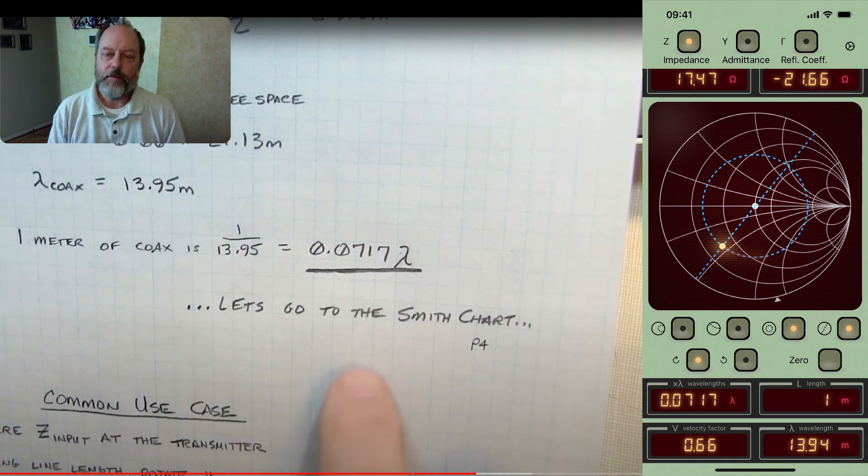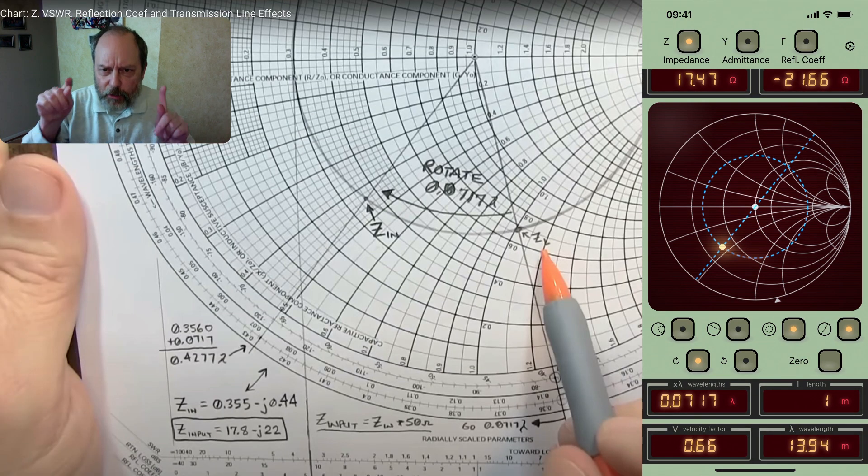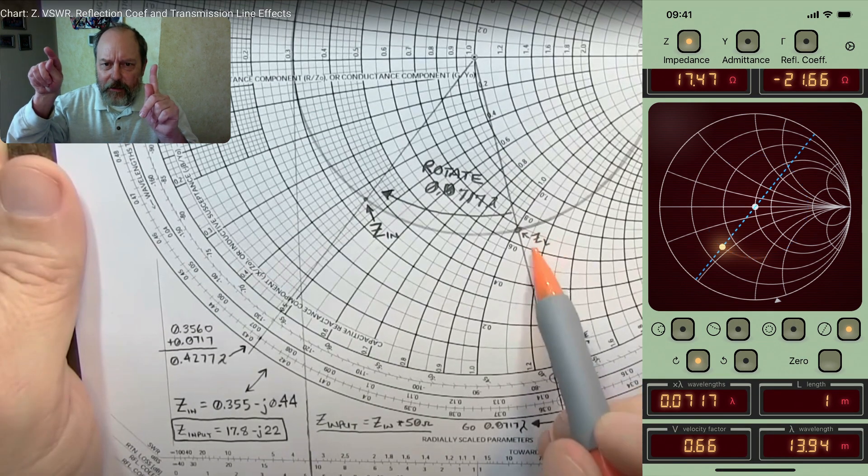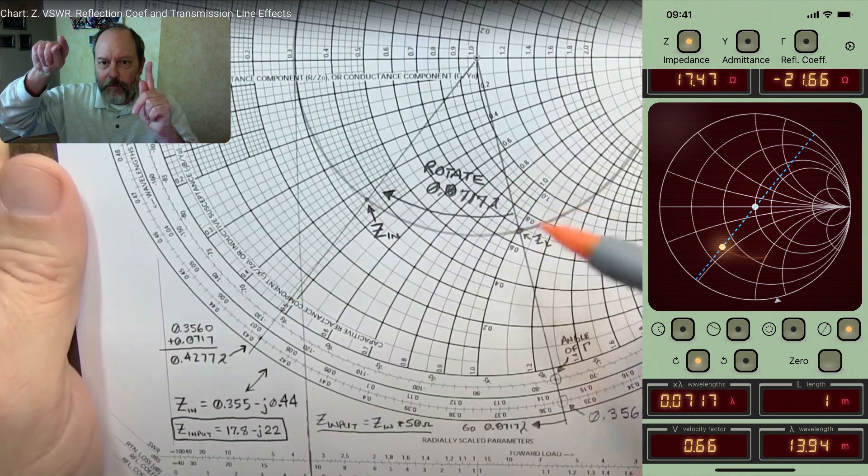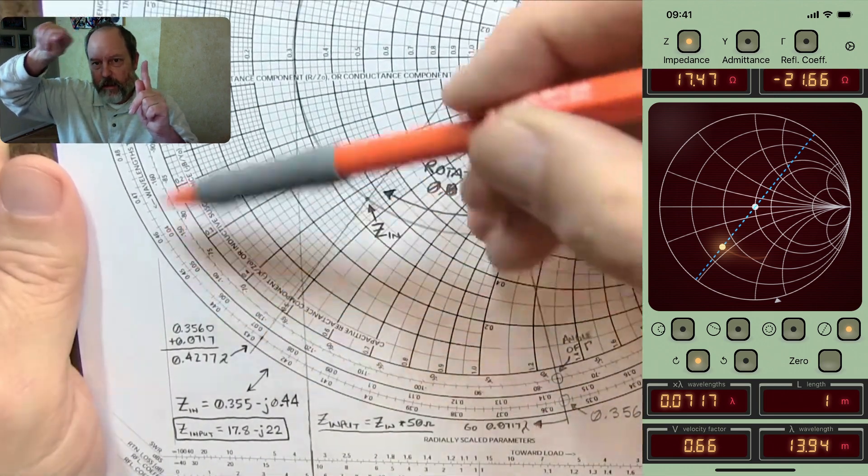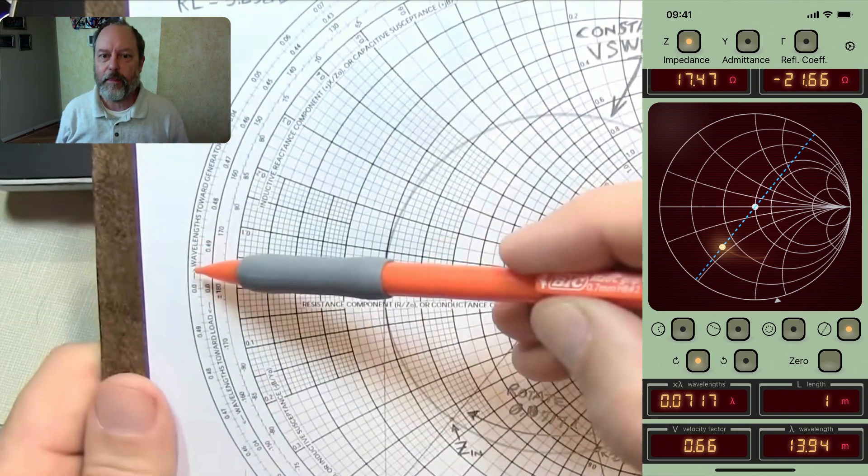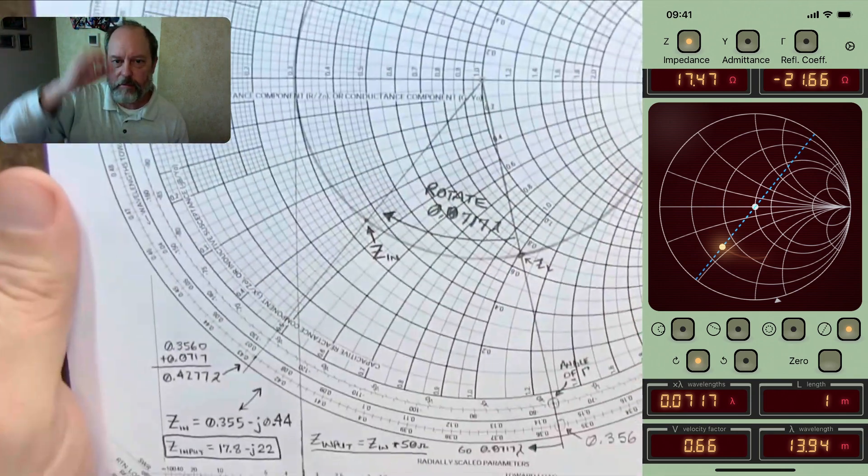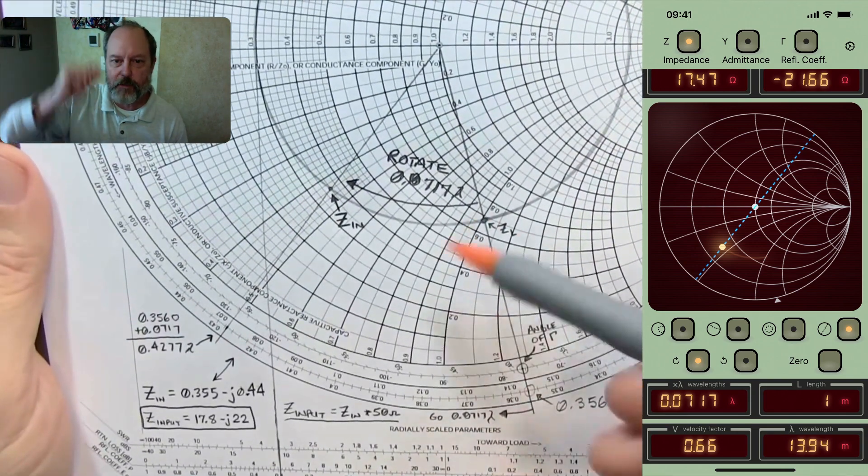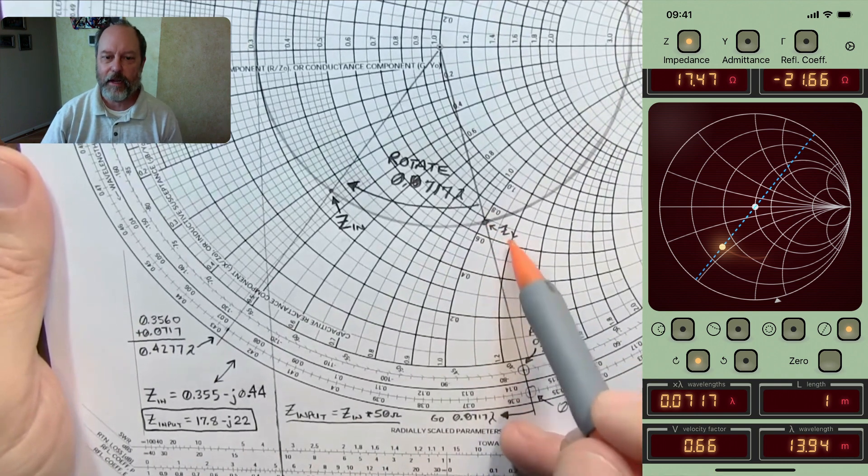So if you temporarily disable the SWR circle, you can more easily see that by revising this length, you can see that the spot in the Smith chart traced out a trace that was pretty much underneath the SWR circle. And that matches what Alan has shown in his chart.